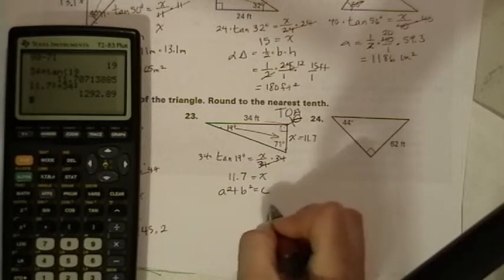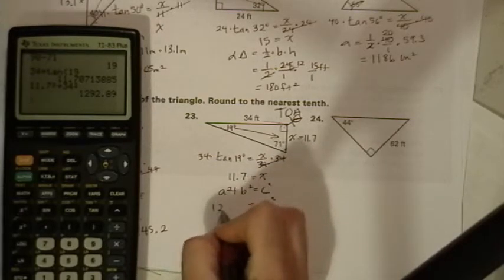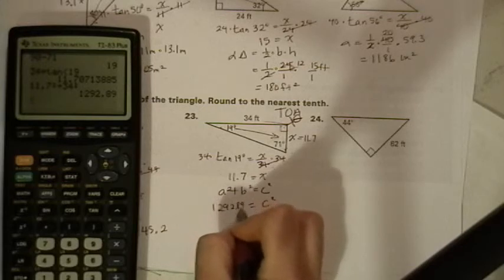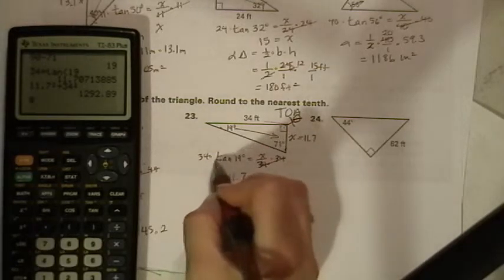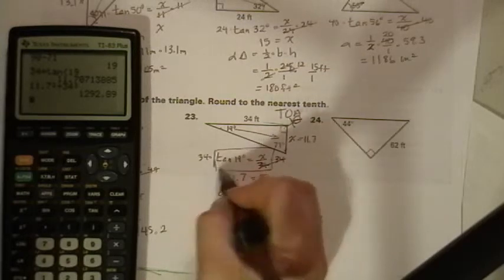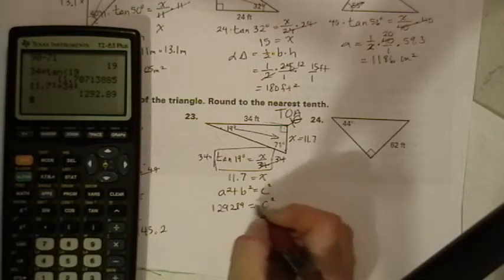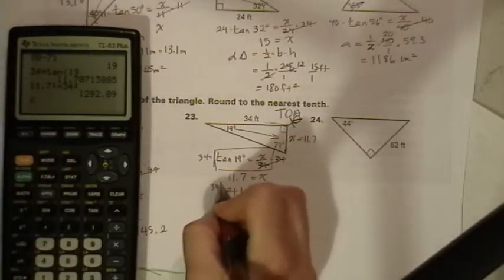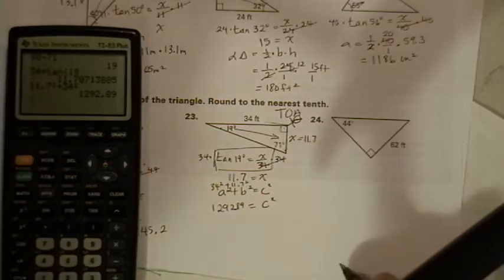c squared, I forgot to put the square in there. This is 1292.89. Now you don't have to write down this part. I need to see this. The tangent equals x over 34. And I need to see something about a squared plus b squared equals c squared. Probably 34 squared plus 11.7 squared equals c squared.